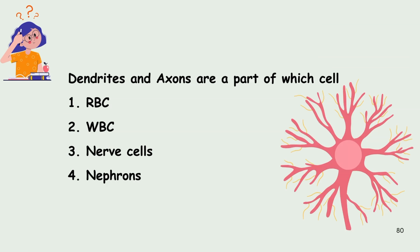Dendrites and axons are a part of which cell? 1) RBC, 2) WBC, 3) nerve cells, or 4) nephrons. The answer is nerve cells — dendrites and axons are parts of nerve cells.